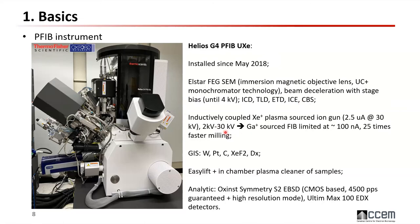What is special about the plasma FIB xenon source is that we can achieve 2.5 microampere beam current. Comparing to the traditional gallium source which is limited to about 100 nanoampere, you are basically 25 times faster. The instrument also has an EasyLift which is fully controlled by the mouse, and a chamber plasma cleaner for samples.